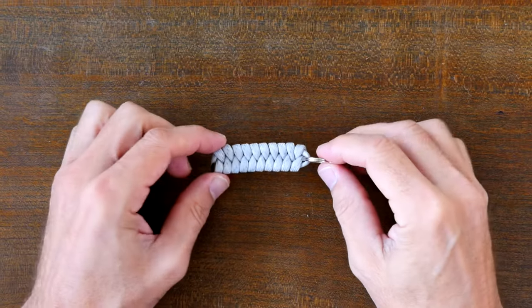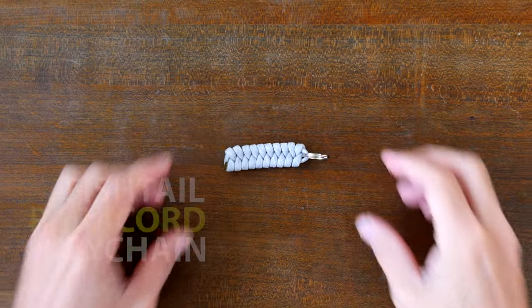When you're finished, you should have something that looks like this. Now for more inspiration and to see other easy paracord keychains, here's a link to my video Seven Easy Paracord Keychains. I hope you check it out. Thanks for watching.